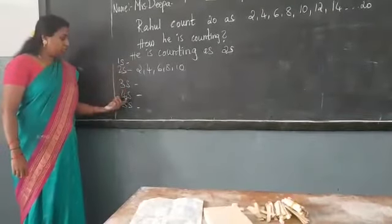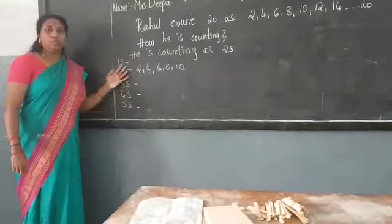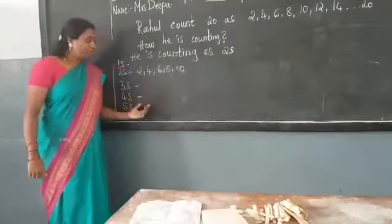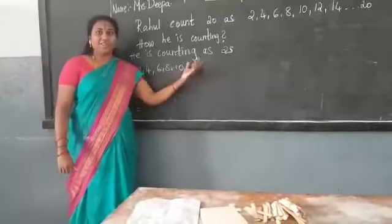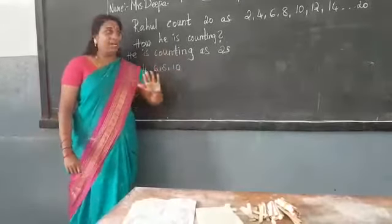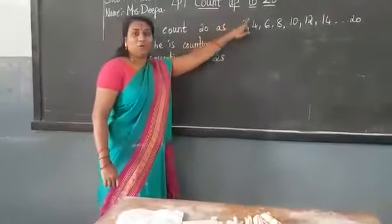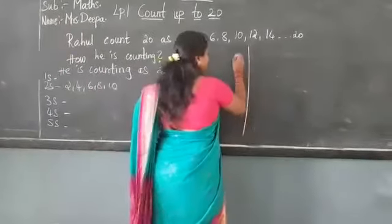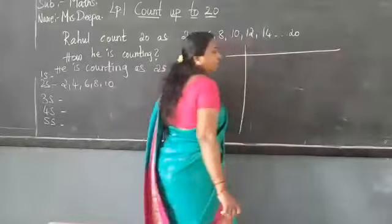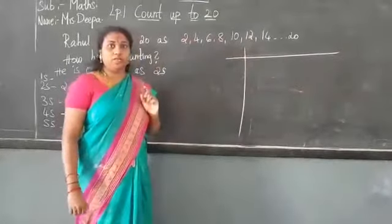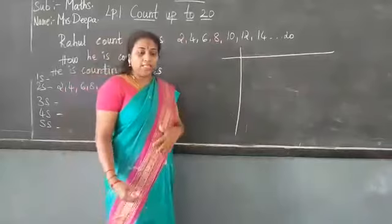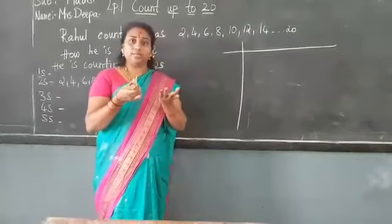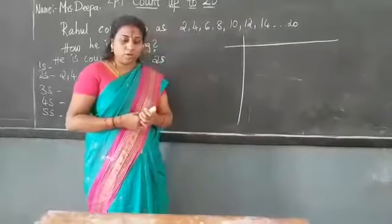Ones, twos, threes, fours, fives also we can learn. Up to 20. This we are going to teach up to 20. Count up to 20. Now we will go here with the help of the picture. With the help of the picture I am showing you children, and the things which I am having, ice cream sticks. You can also use with ice cream sticks or any other things.